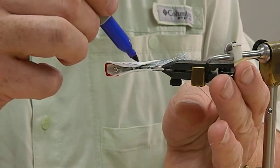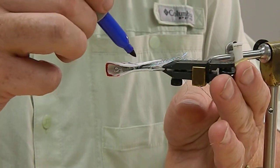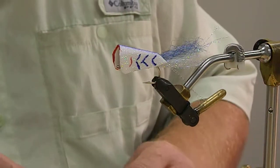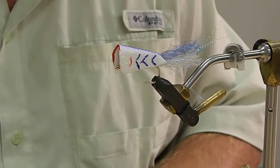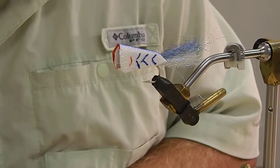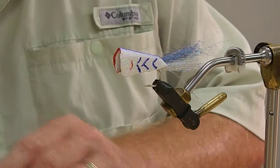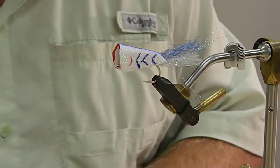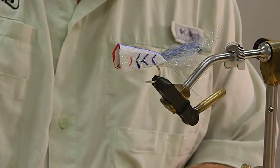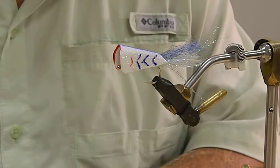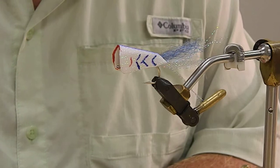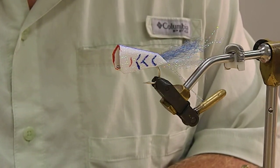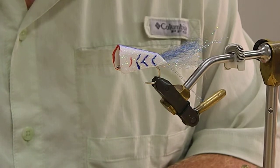And then we'll mix up five-minute epoxy, about the equivalent of about three drops. And I'm going to coat the whole entire fly with this. This makes the fly durable and also gives a nice finish to it.